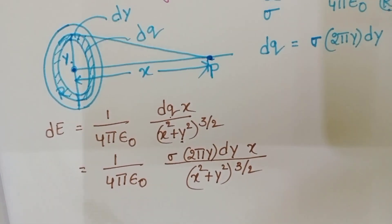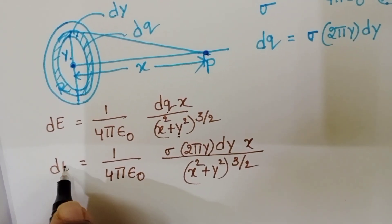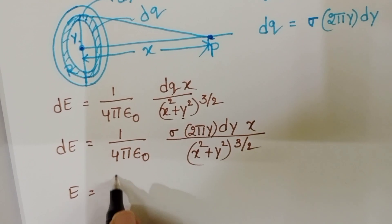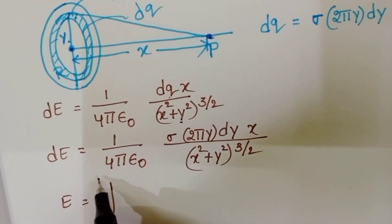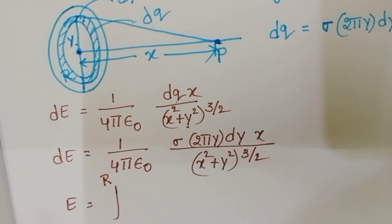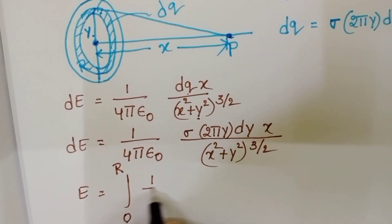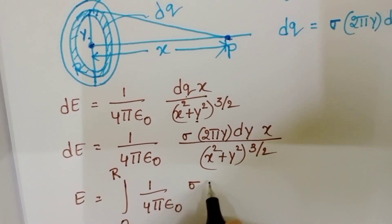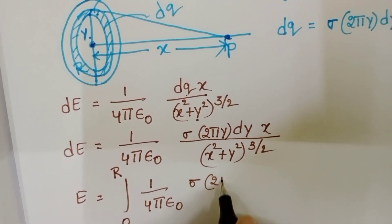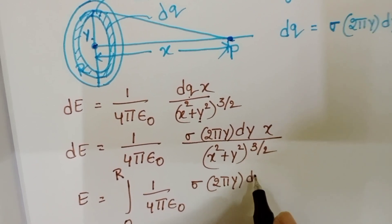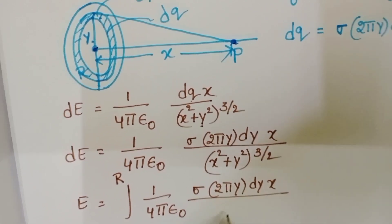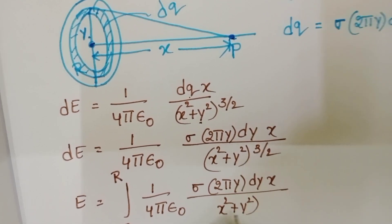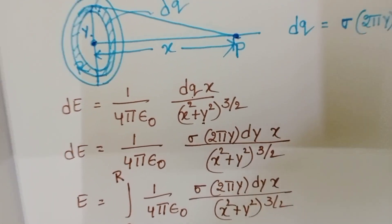To find the total electric field intensity at point P due to the charged disc, take the integration from 0 to r: (1/4πε₀) · sigma · 2π · y·dy · x / (x² + y²)^(3/2).